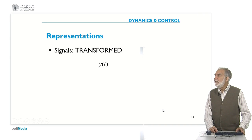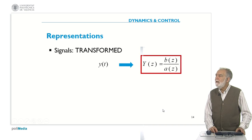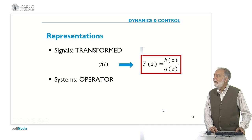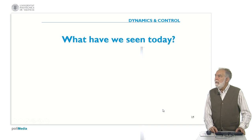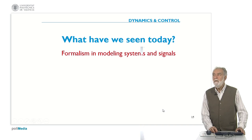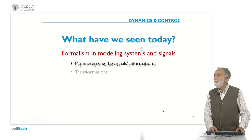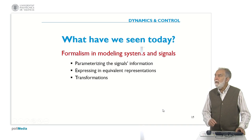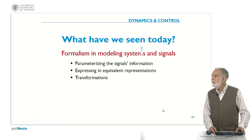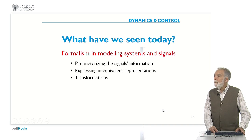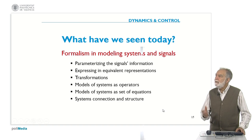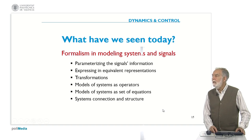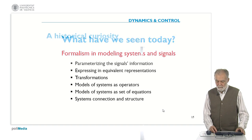Summarizing: representations are signals that can be a function of time or a transform — the Z-transform for discrete time signals or the Laplace transform for continuous signals. Systems are represented by an operator, the transfer function. Today we have seen the formalism in modeling systems and signals. In particular, we have seen the main parameters of signal information, we used transformations to represent signals, expressed system models as operators or as sets of equations, and seen how to deal with the structure of the plant.